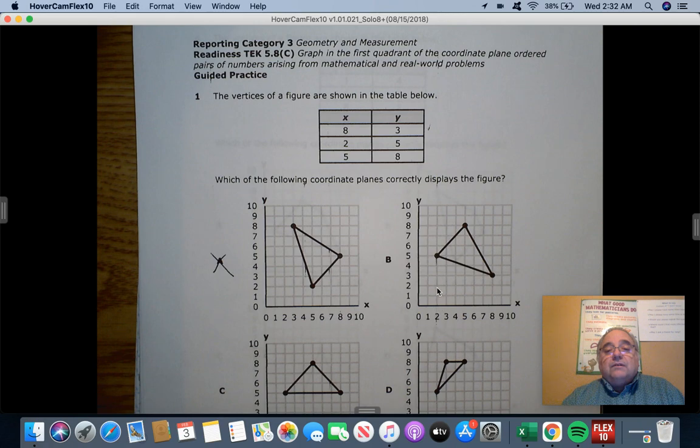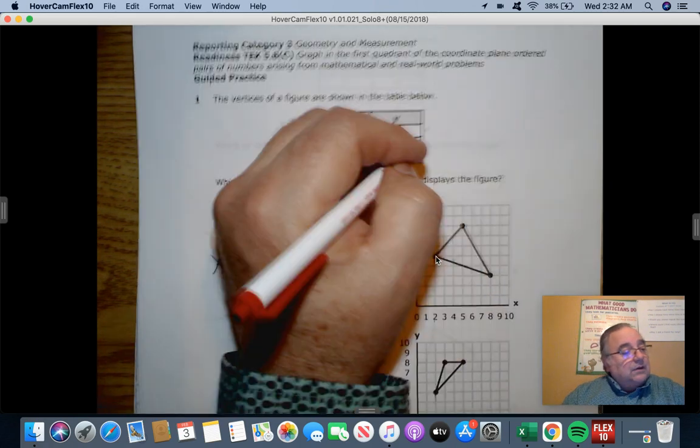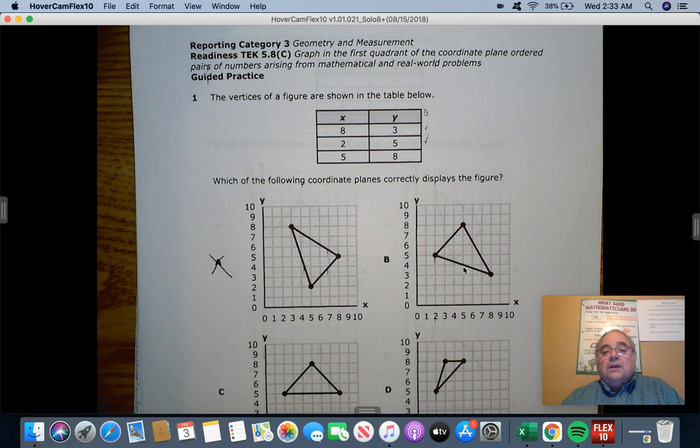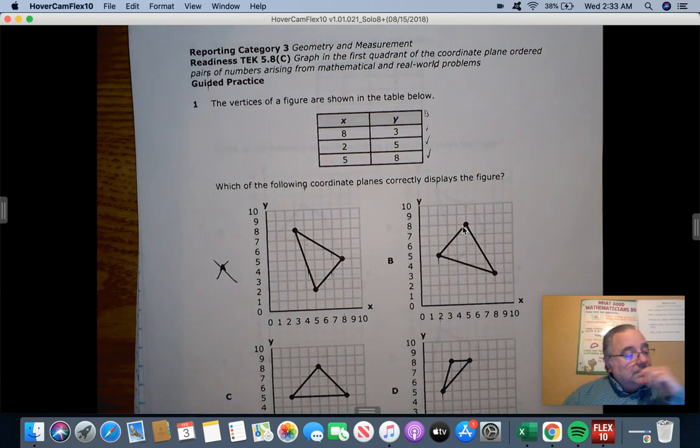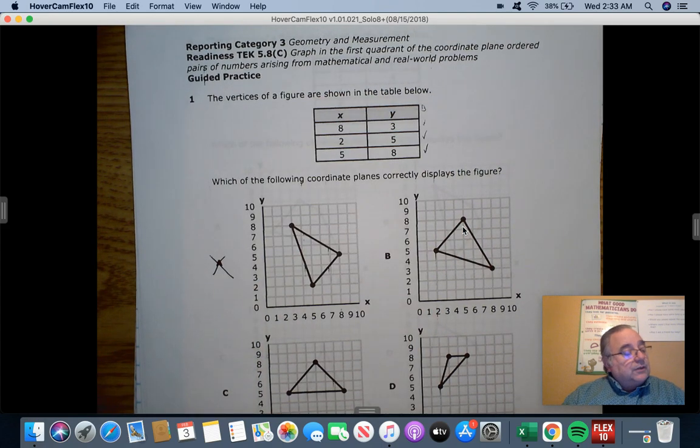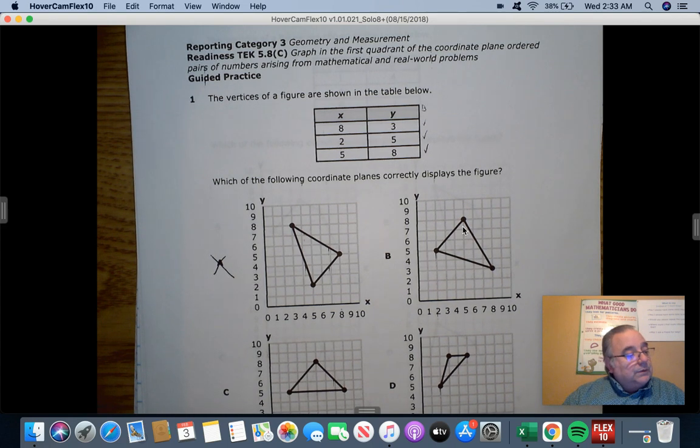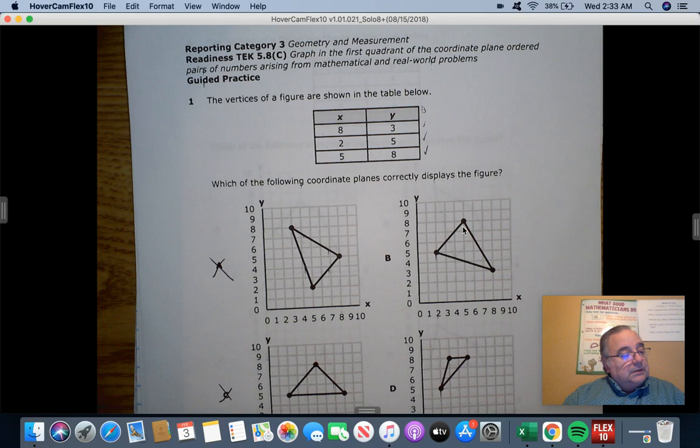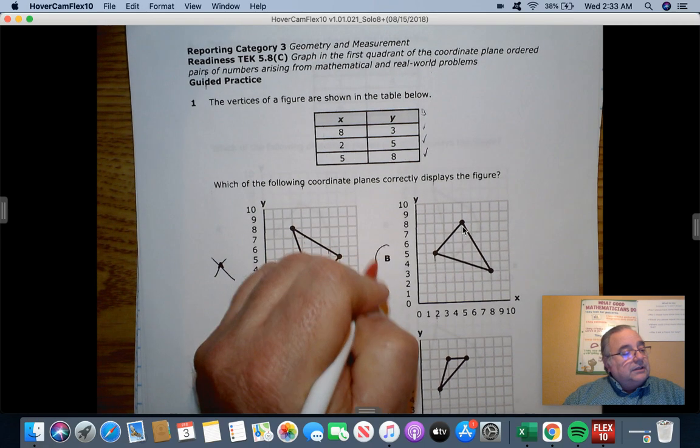The next one we have is 2, X going up 5. 1, 2, 3, 4, 5. That one looks good on B. And the next one we have is 5. 1, 2, 3, 4, 5. And it goes up 1, 2, 3, 4, 5, 6, 7, 8. So far that looks good. Well, this is a maybe. Let me check C. The first one we're looking for is we're going to go all the way out to the 8. Then we go up 1, 2, 3, up. We don't have that one, so that scratches that one out. Same here. We go up to 8, go up 3. Nope. So our answer is B.